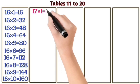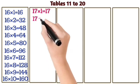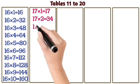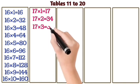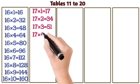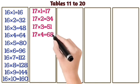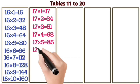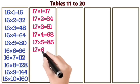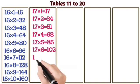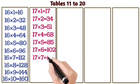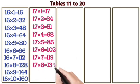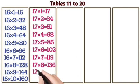17 ones are 17. 17 twos are 34. 17 threes are 51. 17 fours are 68. 17 fives are 85. 17 sixes are 102. 17 sevens are 119. 17 sevens are 13. 17 eights are 136.